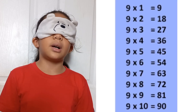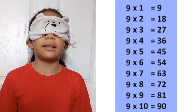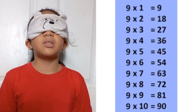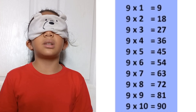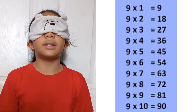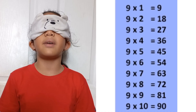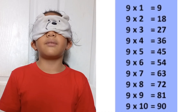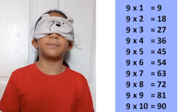9 times 1 equals 9. 9 times 2 equals 18. 9 times 3 equals 27. 9 times 4 equals 36. 9 times 5 equals 45. 9 times 6 equals 54. 9 times 7 equals 63. 9 times 8 equals 72. 9 times 9 equals 81. 9 times 10 equals 90.